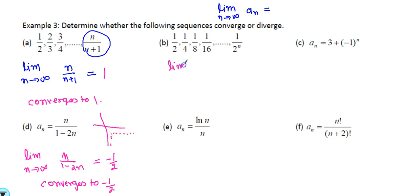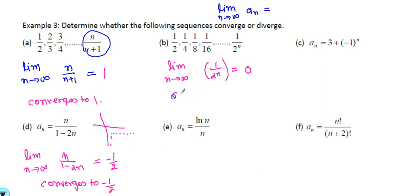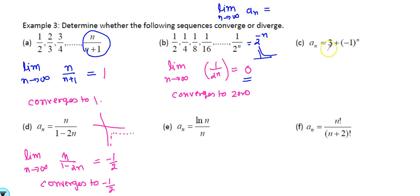Limit as n→∞ of 1/2^n: this is an exponential decay function. One over infinity is 0, so this sequence converges to 0. You can also rewrite this as 2^(−n), which is the decay function — that's why the limit is 0.